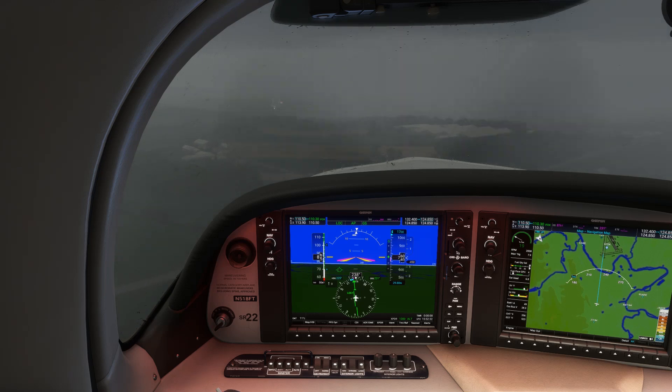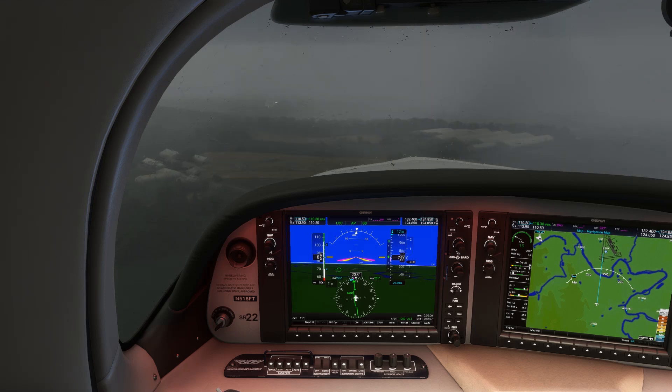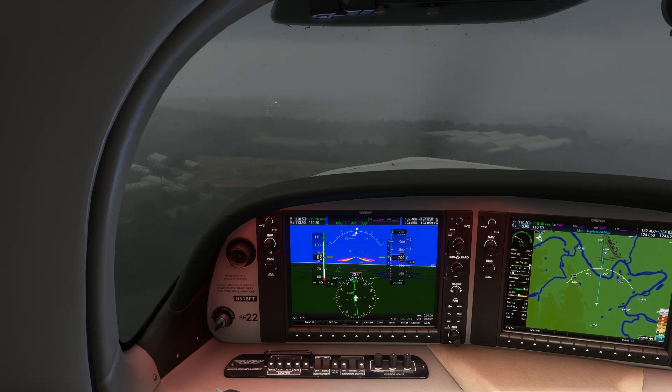Here we're breaking out at just above the decision altitude, the runway's in sight, and we have about a mile of visibility. We could see the farm structures, and the silo would be just over here, so we're able to proceed visually, picking up the two-bar VASI on the landing approach.